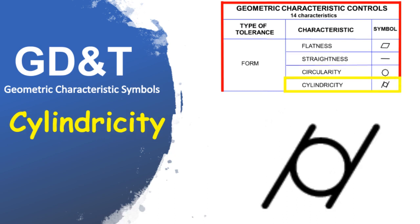Cylindricity is a three-dimensional tolerance that controls the overall form of a cylindrical feature to ensure that it is round enough and straight enough along its axis. Cylindricity tolerance controls the entire surface of a cylinder, not just a two-point measurement. It is used for shafts and pins that have a critical cylindrical element that needs to be both round and straight along its axis, such as a sliding shaft.